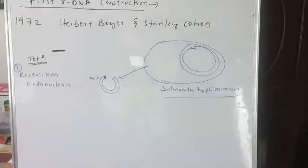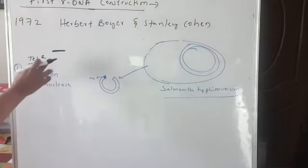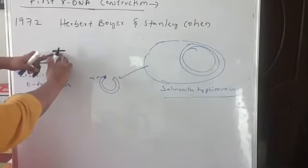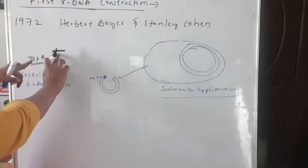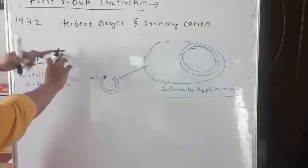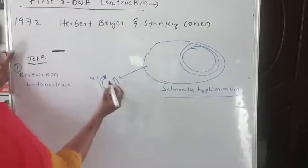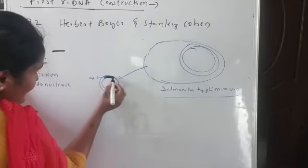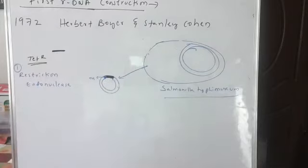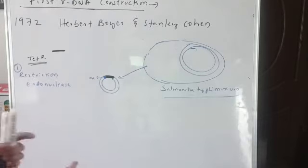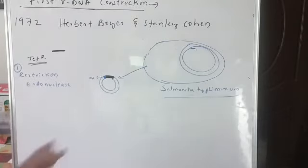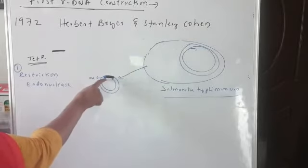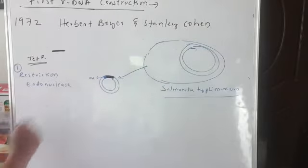What they are doing now is inserting the desired gene. This is the gene of interest — the tetracycline resistance gene — inserting it into this plasmid. Now, there should be some enzyme which helps in binding this tetracycline resistance gene with the plasmid.